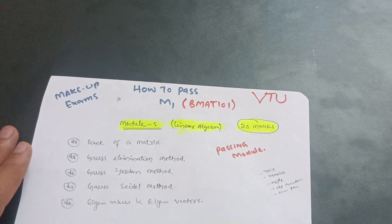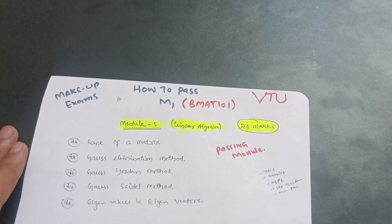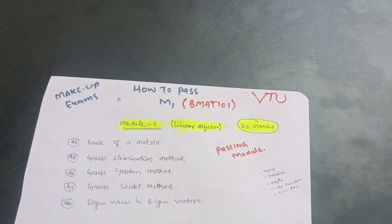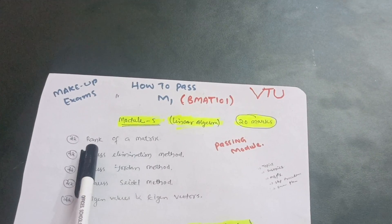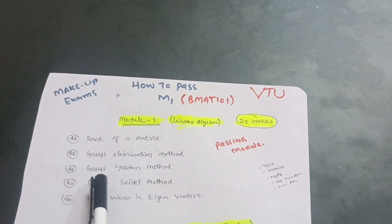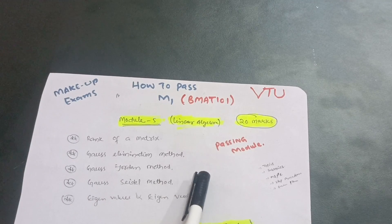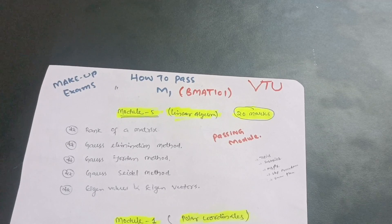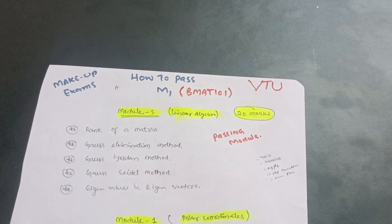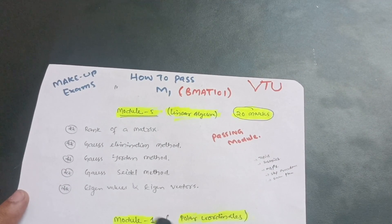If you follow model question papers, remember that VTU does not always set papers strictly according to them — it depends on luck. You have to compare model question papers with your syllabus copy to recognize which topics are relevant. In mathematics, please write in a step-by-step procedure. For example, when solving rank of a matrix with row transformations, write each operation like R1 minus R2 clearly and in stepwise manner, so VTU evaluators are not confused and you get full marks.